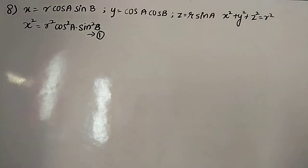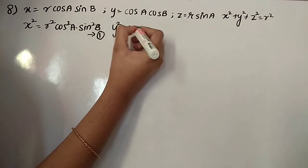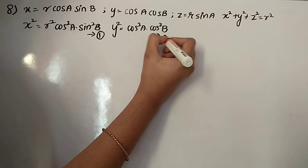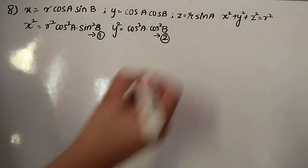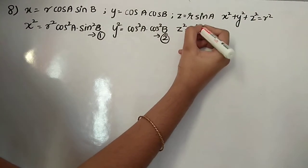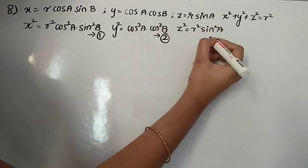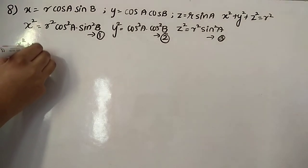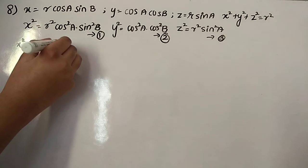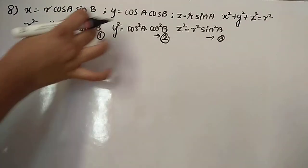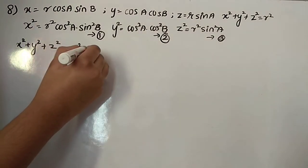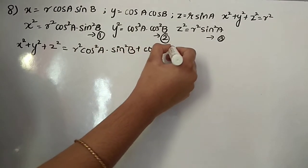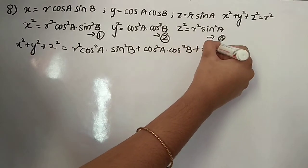Now y squared: y² = r²·cos²(a)·cos²(b). This is equation 2. And equation 3: z = r·sin(a), so z² = r²·sin²(a). Now we add: x² + y² + z² equals all these values added up.